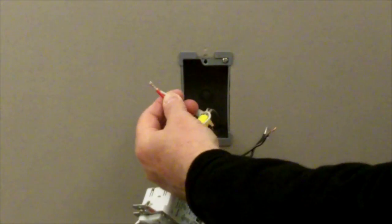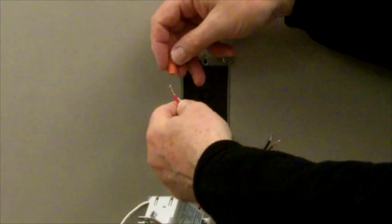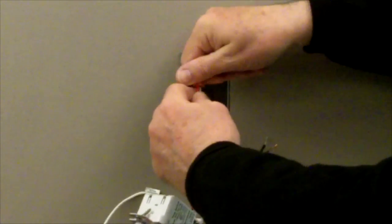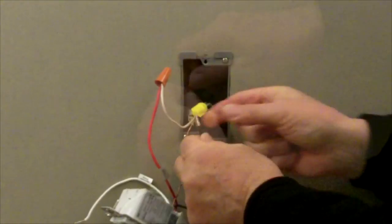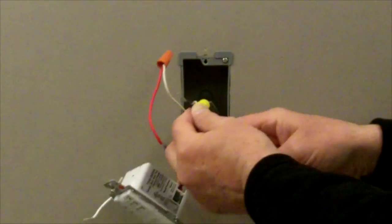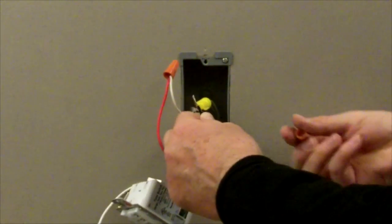Only connect the RT1 to a single pole circuit. The RT1 is not suitable for use on three-way circuits. Connect wires by twisting together and capping them with the wire nuts provided with the RT1 timer.